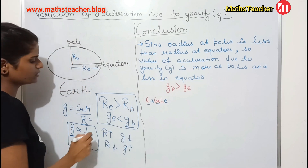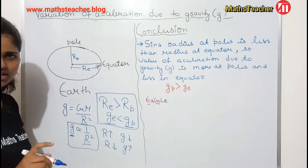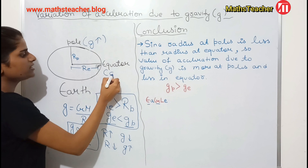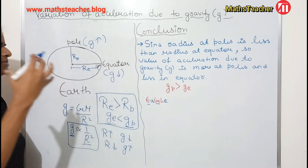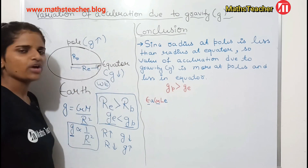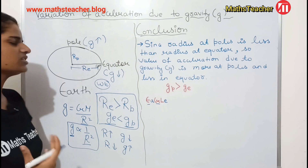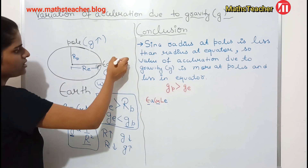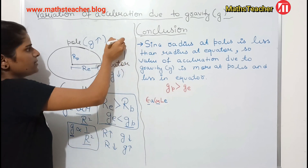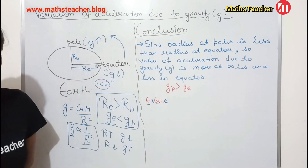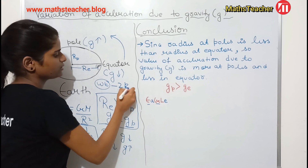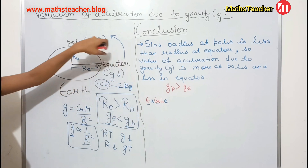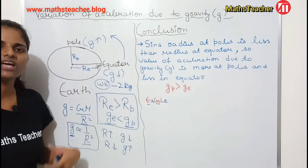Acceleration due to gravity at poles is greater than at the equator. Now let's talk about some conceptual things. If we take an object of 2 kg from the equator to the poles, the gravity at the poles will increase. So the weight of that 2 kg object will be higher at the poles than at the equator, because acceleration due to gravity at poles is more.